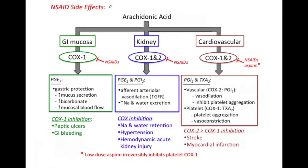Looking at the NSAID side effects, the side effects depend on the type of COX inhibitor used. Basically, NSAIDs produce action on gastrointestinal mucosa, kidney, and cardiovascular system.